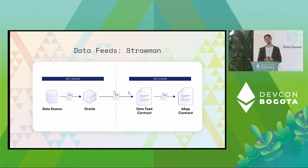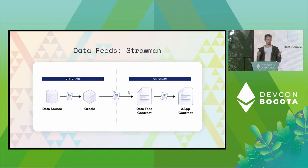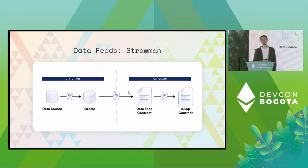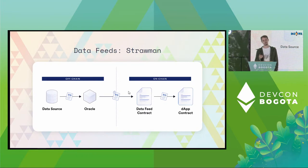In the straw man example, we have a data source that the Oracle observes. In this case, the data source says $10 is the price. The Oracle will sign that price and provide it to a contract running on chain. Then a DApp contract can read the price from our data feed contract.